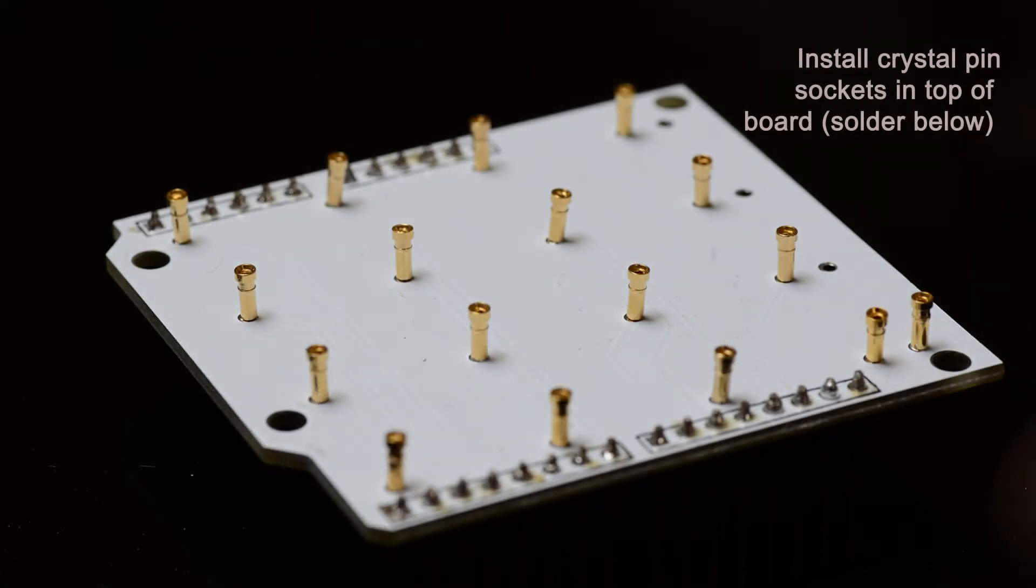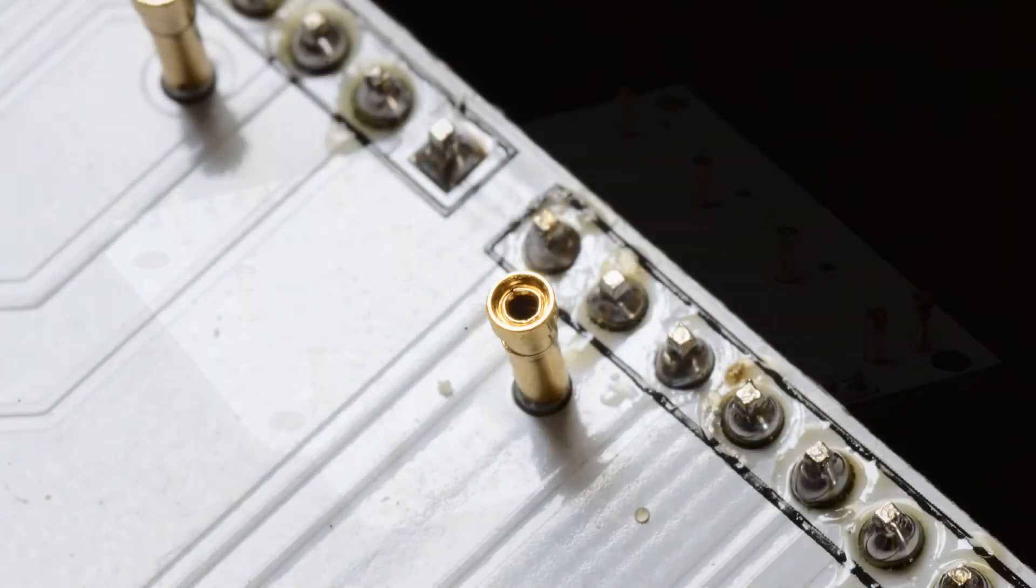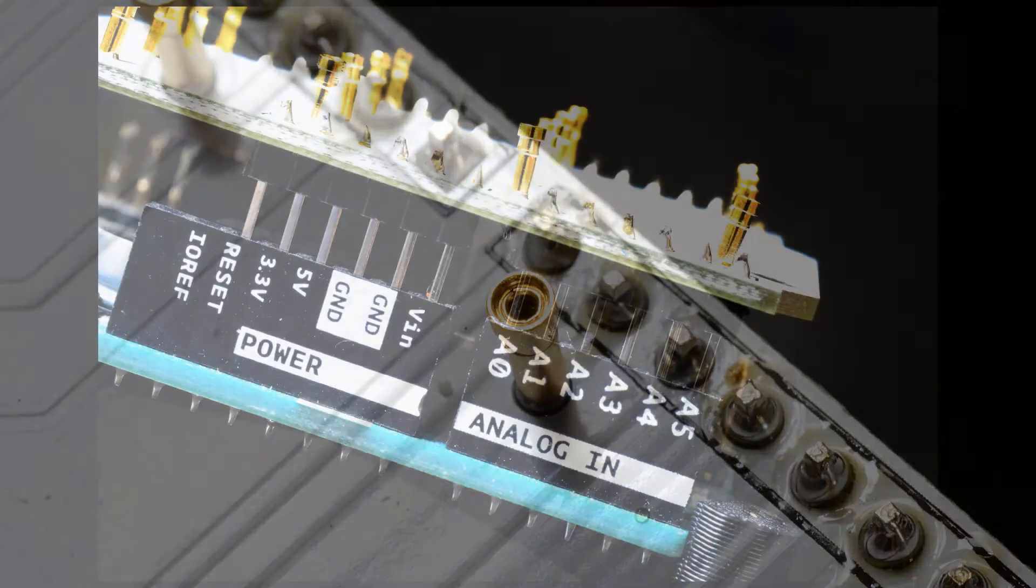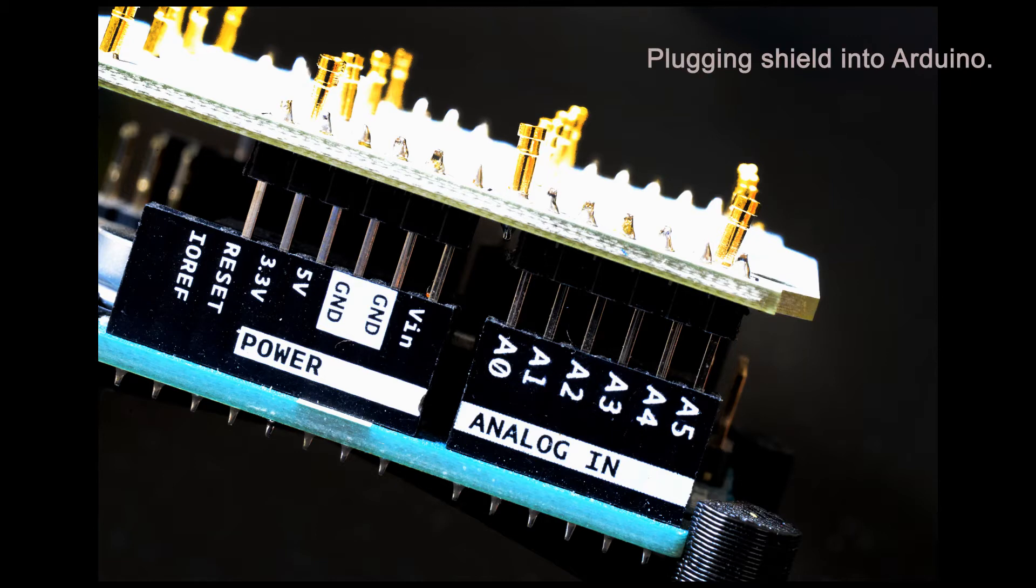Flipping the board over, fit the pin sockets into the top and solder each in from the bottom. Once completed, it will align with the sockets on the Arduino.